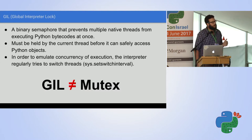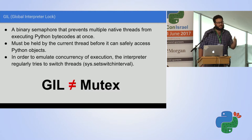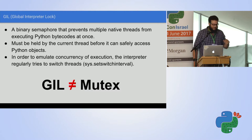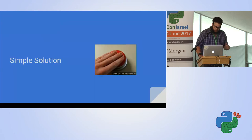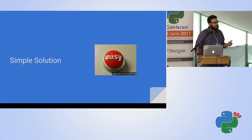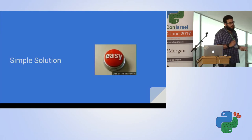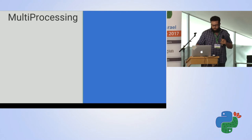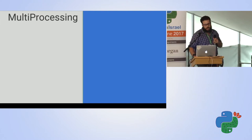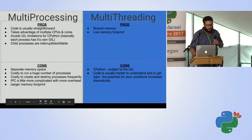There's a great talk about the GIL by David Beasley - I borrowed a bit of his demo about showing how the GIL hurts us. You might think there's a simple solution: instead of using threads, why not use multi-processing? Each process will have its own GIL, its own runtime, its own interpreter, its own VM.